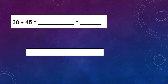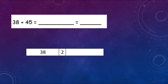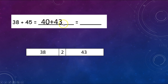Let's try this one: 38 plus 45. Let's put our 38 here. What is the closest 10 to 38? 40. How many more do we need to add to get to 40? 2. Good job. So if we add 2 here, we need to take away 2 from 45, which gives us 43. So our new number sentence is 40 plus 43. Go ahead and solve that. Did you get 83? Good job.